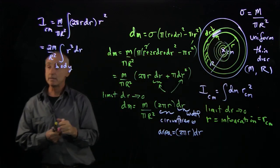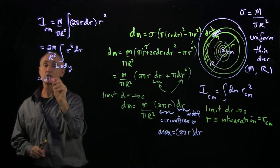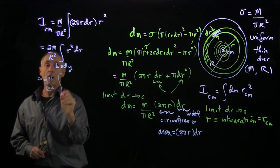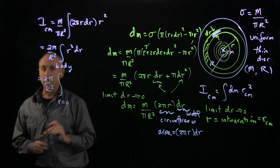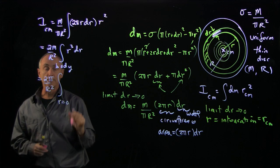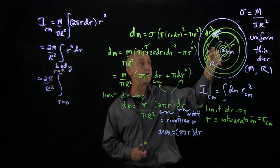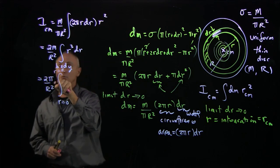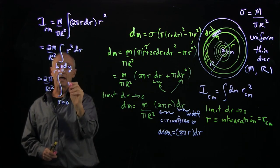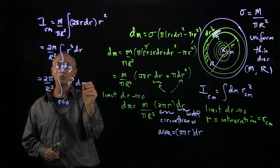So the limits of our body integral with respect to our integration variable, we start with rings that essentially have no width, and we're adding up the contribution of every ring until we get to rings of radius r, the capital R.